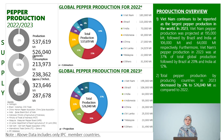In terms of global production for 2022-2023, as you can see from the slide, Vietnam continues to be reported as the largest pepper producer in the world. In 2023, Vietnam's pepper production was projected at 195,000 metric tons, followed by Brazil and India at 106,000 metric tons and 64,000 metric tons respectively. Vietnam's pepper production in 2023 was at 37% of total global production, followed by Brazil at 20% and India at 12%. The total pepper production by producing countries in 2023 decreased by 2% to 526,040 metric tons as compared to 2022.